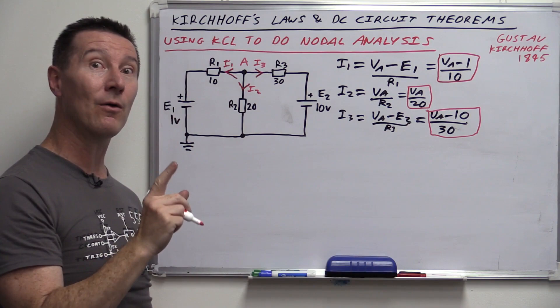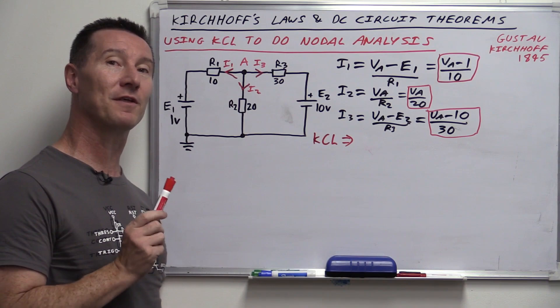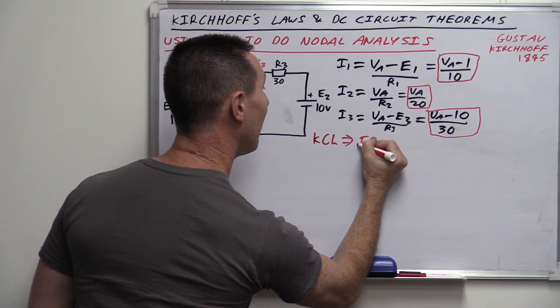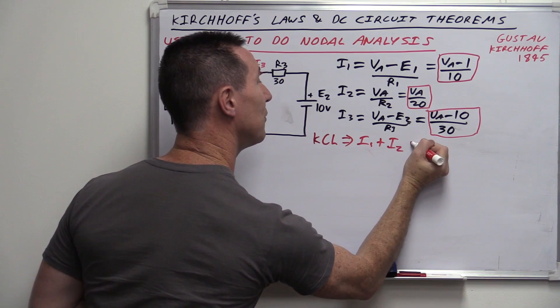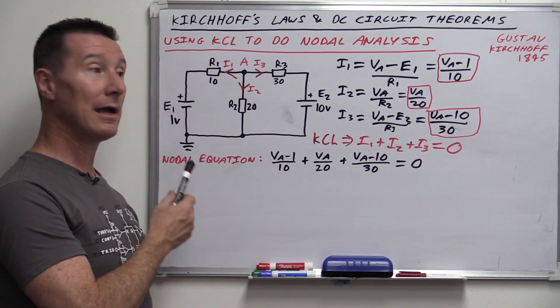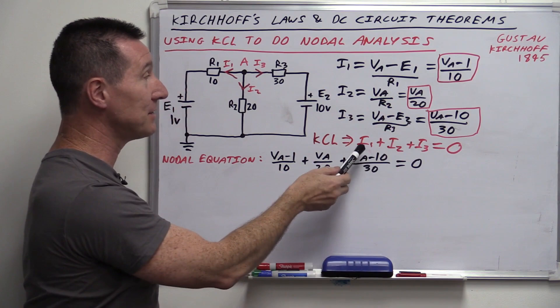So hopefully that wasn't too hard. Kirchhoff's current law — we derived some basic equations for the various currents, set the Kirchhoff's current law sum equal to zero, plugged in the numbers, and got our answer. We worked out VA and from that can work out anything else. We can do that for any number of nodes — just repeat this process. For more nodes you'd end up with complex equations requiring matrices and determinants to get the final answer.